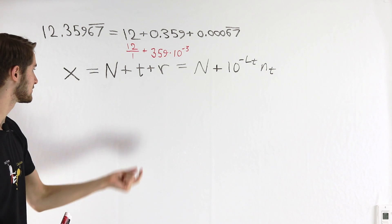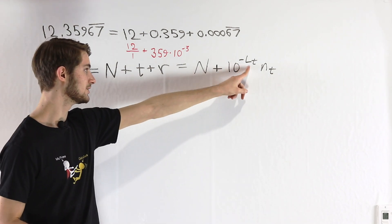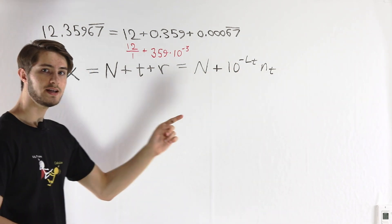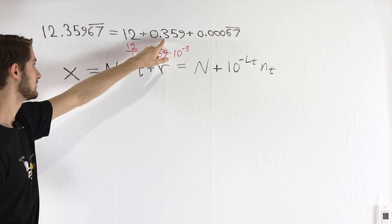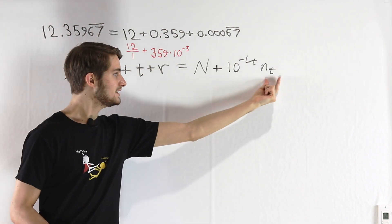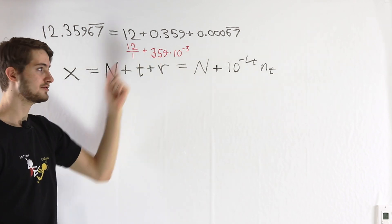For a general terminating decimal T, it'll have a length l sub t, and n sub t is just the digits in that decimal. In this case 0.359, n_t was 359.